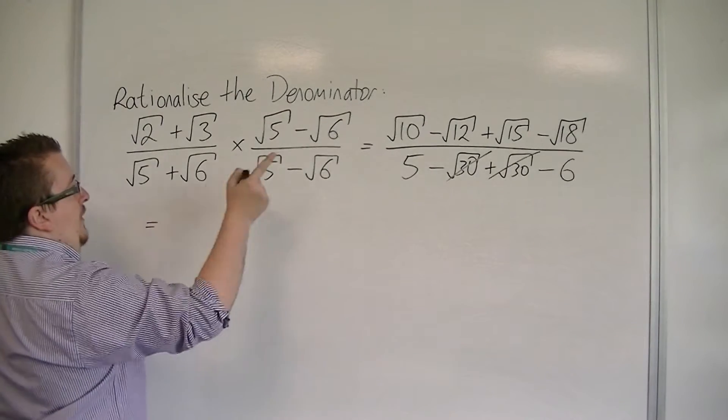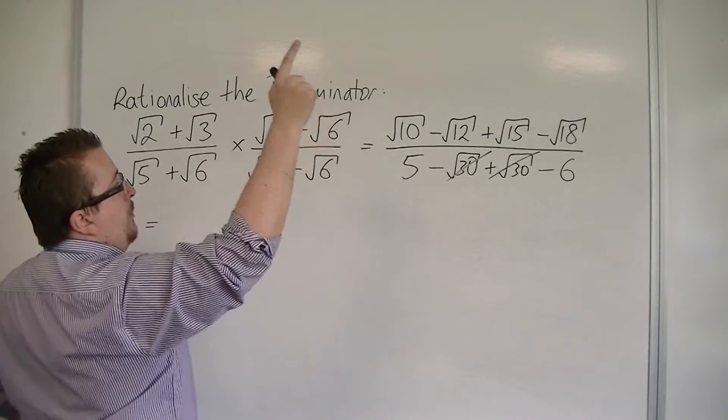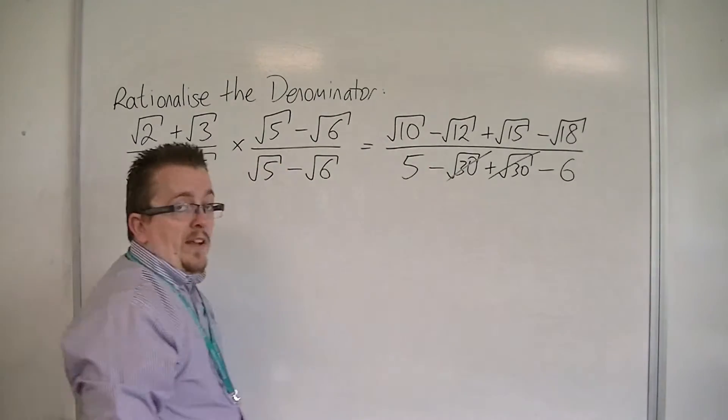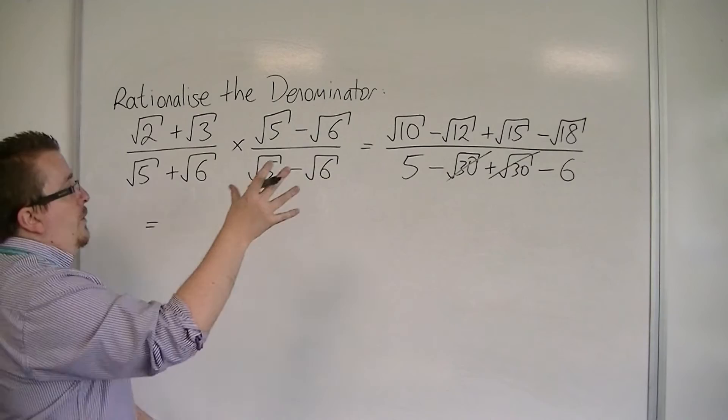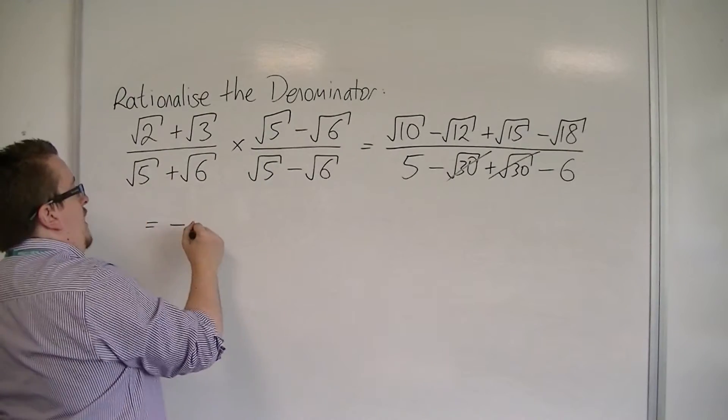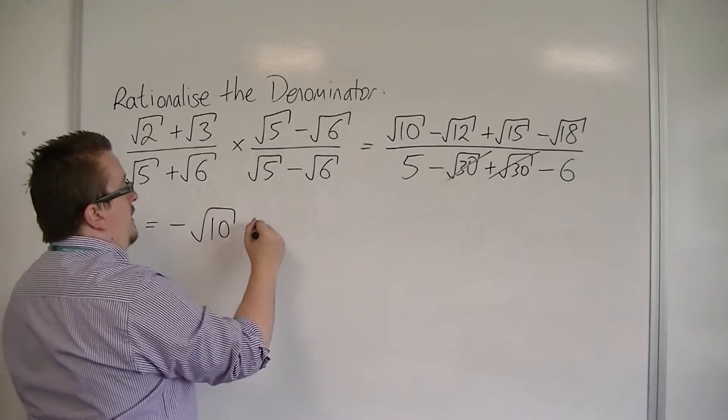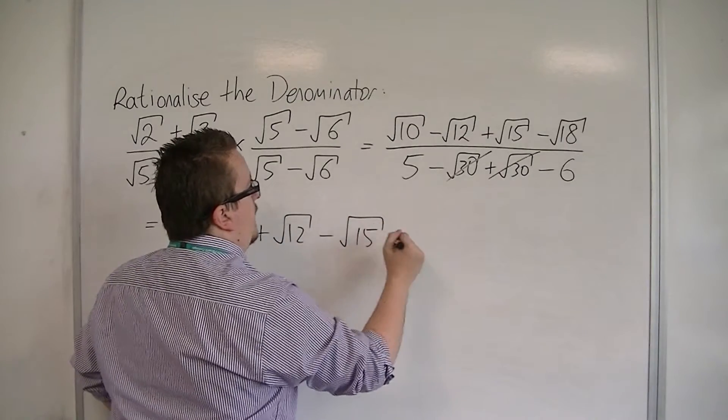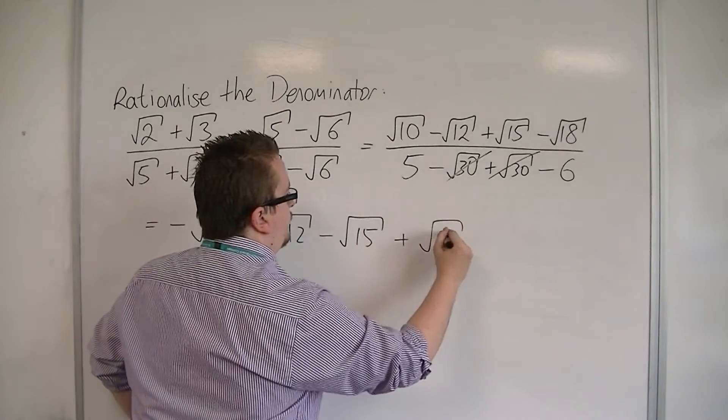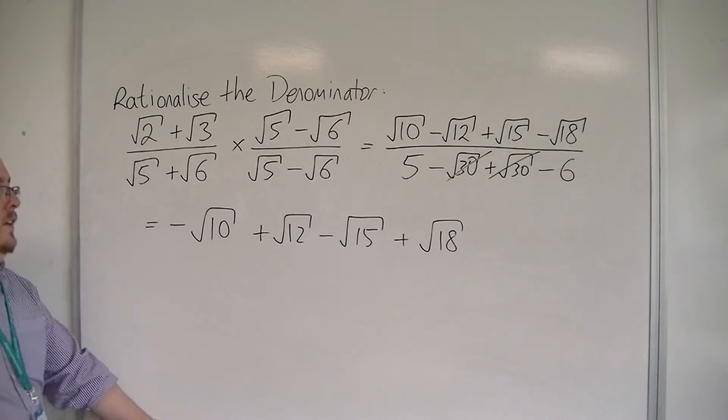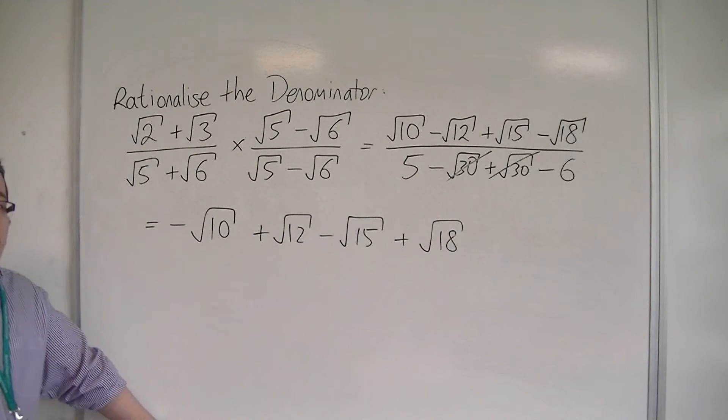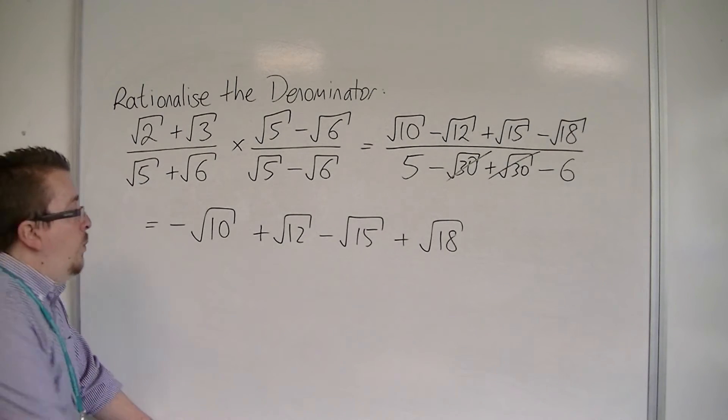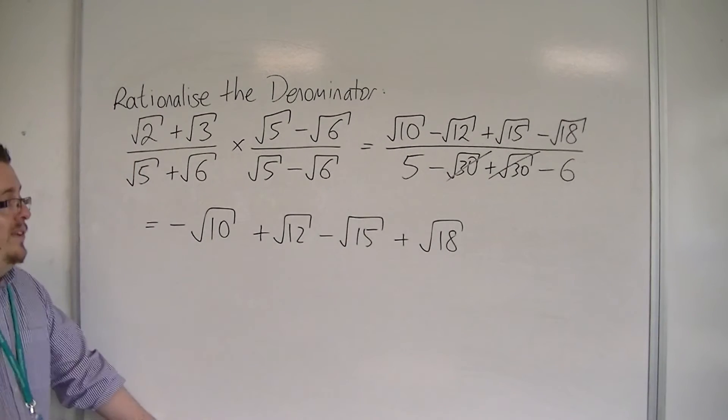So I've got root 10 take away root 12 plus root 15 minus root 18 over 5 take away 6, which is just minus 1. So divided by minus 1 just changes the sign of each of the elements in the numerator. So I could leave it like that, or you could start spotting actually root 12 and root 18 can be simplified.